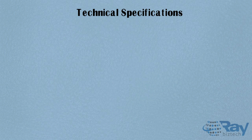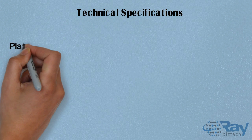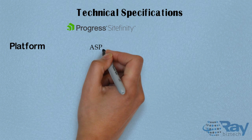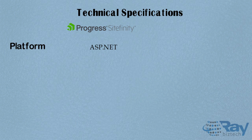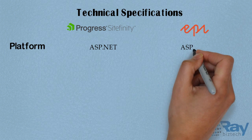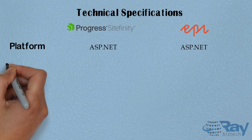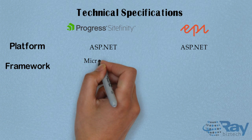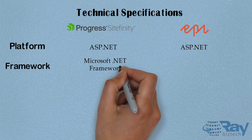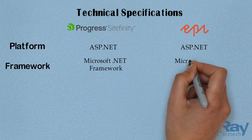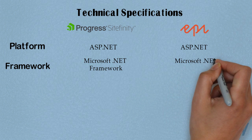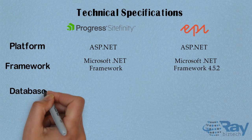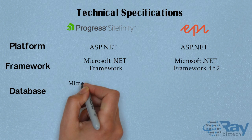Technical Specifications: The platform for Progress Site Affinity is ASP.NET, and for API Server, it is also ASP.NET. The framework for both Site Affinity and API Server is Microsoft .NET Framework, version 4.5.